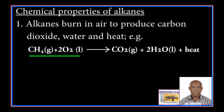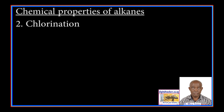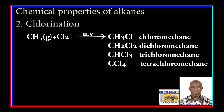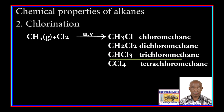For example, methane burns in oxygen to produce carbon dioxide, water, and heat. 2. Chlorination: Alkanes react with chlorine in the presence of sunlight or UV light to produce chlorinated alkanes. For example, when methane reacts with chlorine in the presence of sunlight, it gives a mixture of chloromethane, dichloromethane, trichloromethane, and tetrachloromethane.